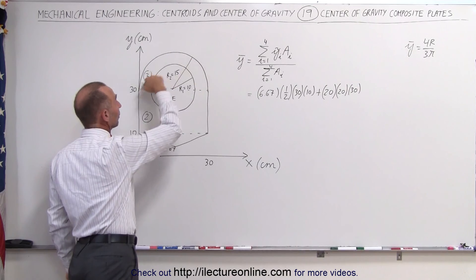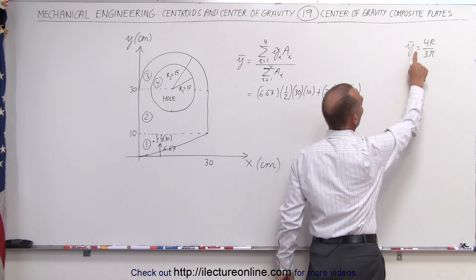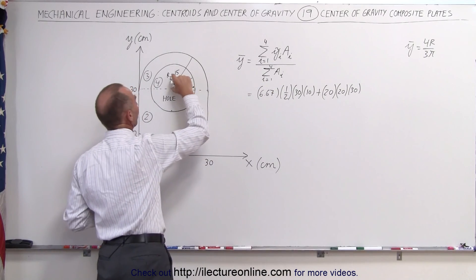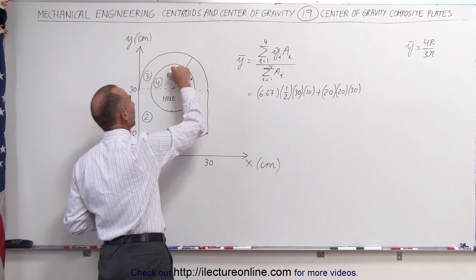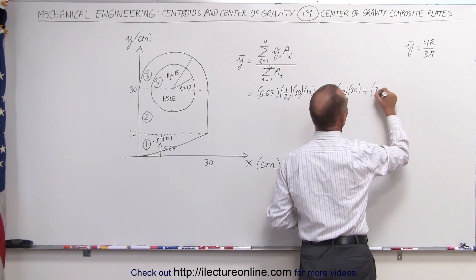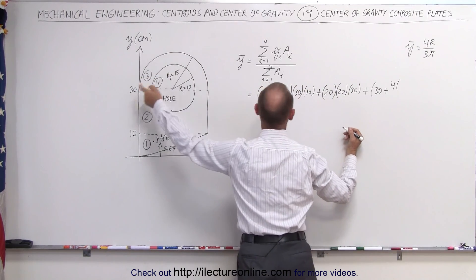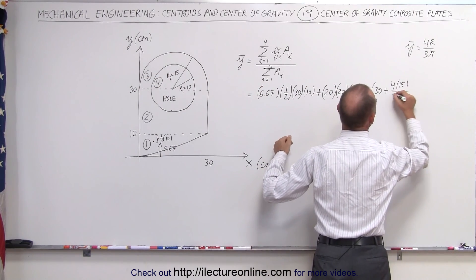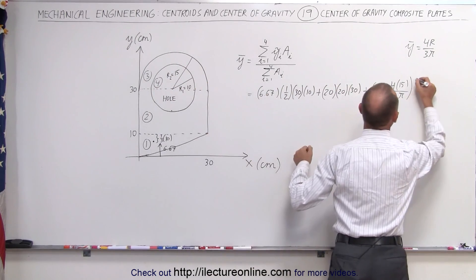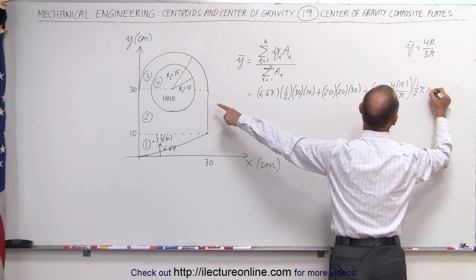Now we do the semicircular region — that's region number 3. In the y-direction, the y-coordinate of the semicircular area is 4r divided by 3π from the flat edge. We add that to 10 plus 20 (a total of 30), so the y-coordinate will be 30 plus 4 times r. The radius of the semicircular region is 15 centimeters, divided by 3π. Then we multiply by the area, which is one-half π times 15 squared.